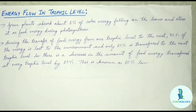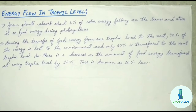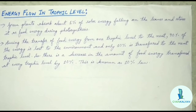Energy flow is unidirectional. The energy that is captured by autotrophs does not revert back to the solar input, and the energy which passes to the herbivores does not come back to the autotrophs. As it moves progressively through the various trophic levels, it is no longer available to the previous trophic level.